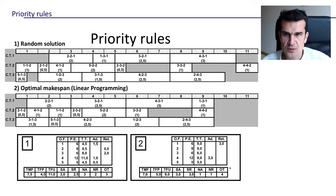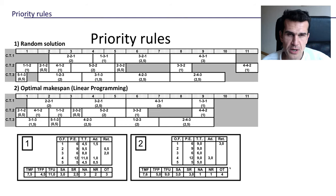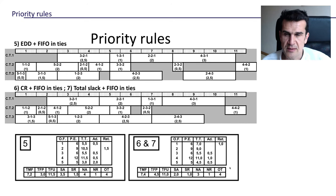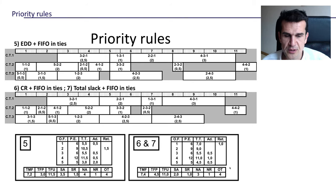Here you've got the solutions for a random solution, one solution that uses linear programming, shortest processing time solving ties with FIFO, longest processing time solving ties with FIFO, earliest due date solving ties with FIFO, the critical ratio, and the total slack. In total, seven different priority rules, each of which will give us a different result.